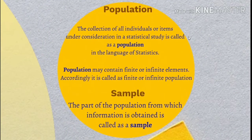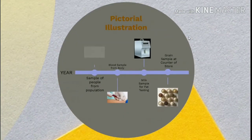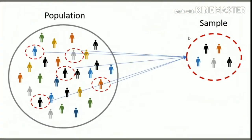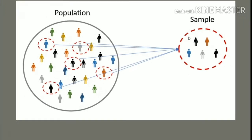Population is the collection of all individuals or items under consideration in a statistical study. It may contain finite or infinite elements. Accordingly, it is called a finite or infinite population. A sample is the part of the population from which information is to be obtained. To study the nature or characteristics of some group of people, we study a subset of some people from that group — this is called a sample. It means it is a sample of people from the population.